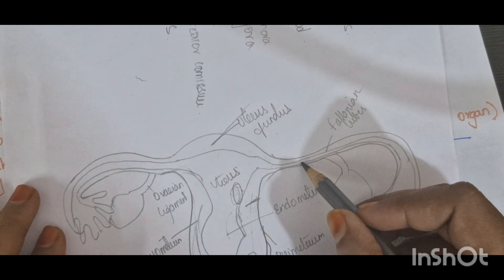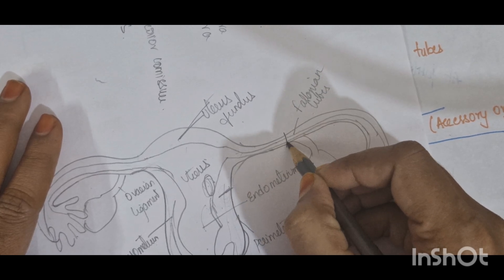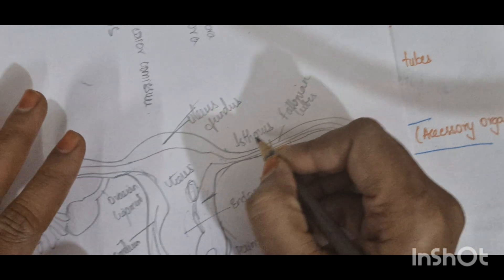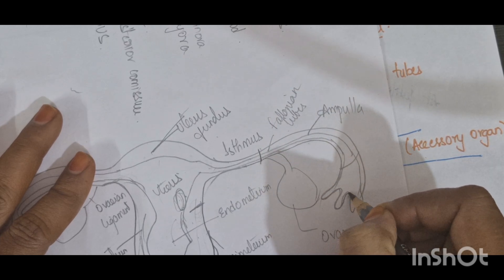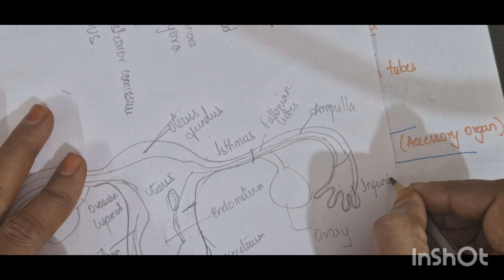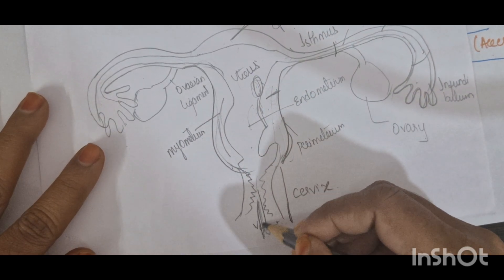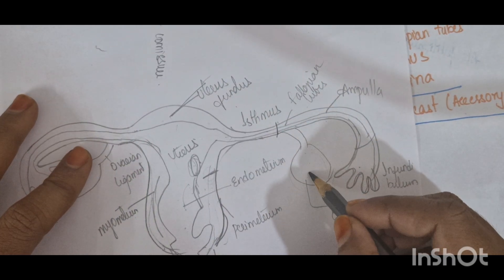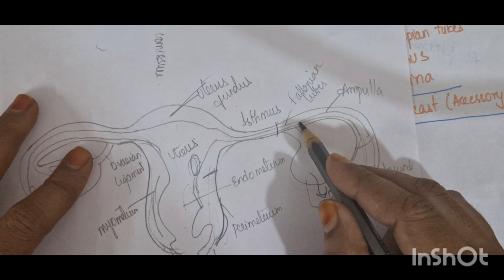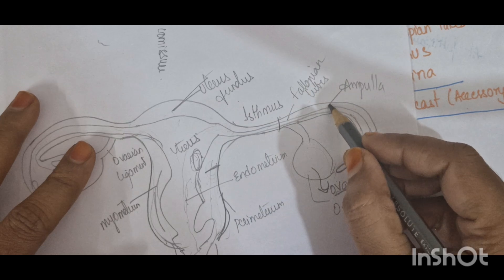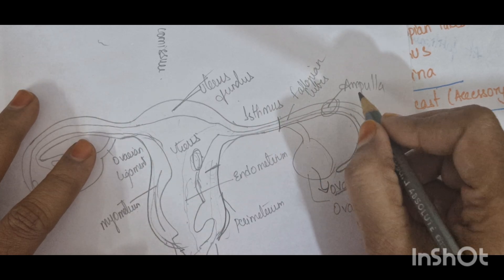These long tubes are called the fallopian tubes. The fallopian tube has three parts: the isthmus, the ampulla, and the infundibulum, which has fimbria-like structures. When the ovary produces ova, the ova are captured by the infundibulum and carried through the fallopian tube. Sperm enters through the vagina and travels up. The fusion of ova and spermatozoa — forming the zygote — takes place in the ampulla part of the fallopian tube.